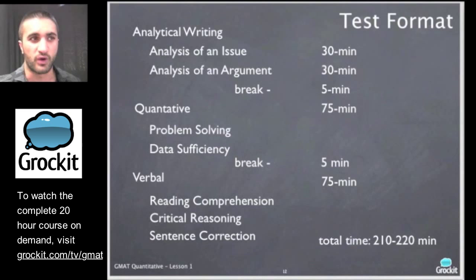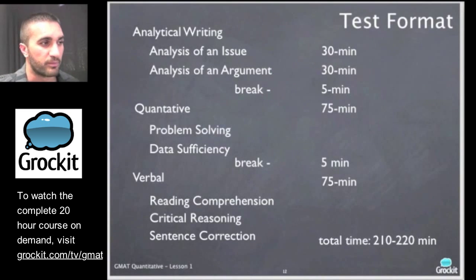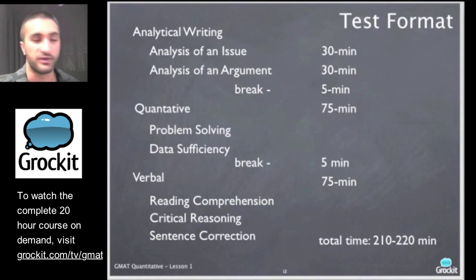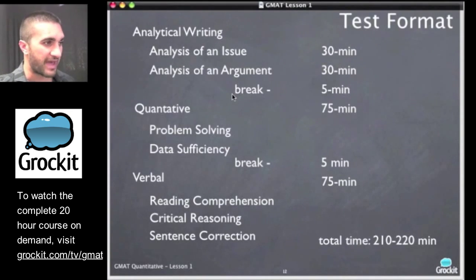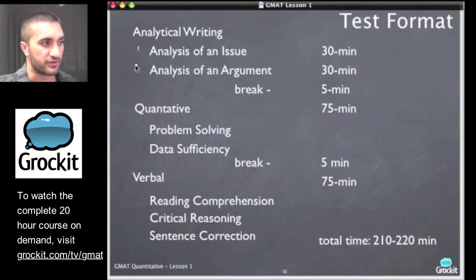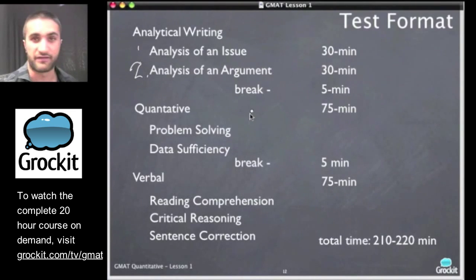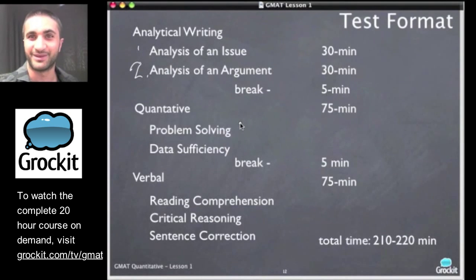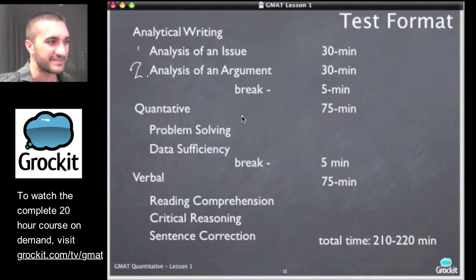Just before we jump into our critical reasoning lesson, let's talk briefly about the test format so we're all on the same page. The GMAT will have an analytical writing section with two essays, and you'll have 30 minutes to take each one unless the GMAT bulletin changes that. So currently you have 30 minutes for each one of these.